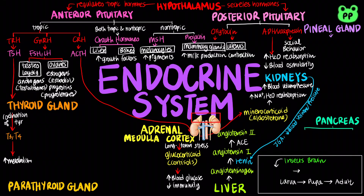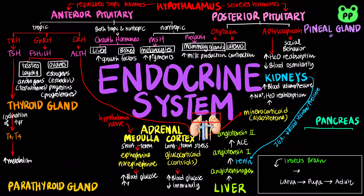Short-term stress can stimulate the hypothalamus to release nerve signals that travel through the spinal cord to trigger the adrenal medulla to release epinephrine and norepinephrine, which increases blood glucose, metabolism, and blood pressure.